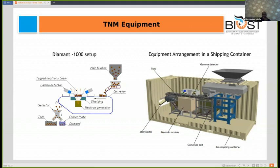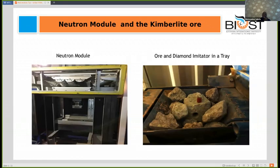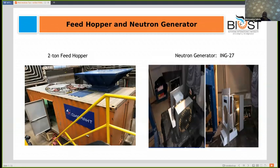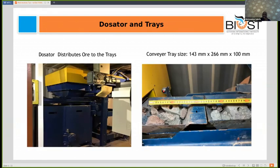On the right is the arrangement of equipment in a shipping container. On the left is a neutron module showing the BGO detectors and the neutron generator. On the right is a tray containing the kimberlite ore and a diamond imitator — the red or brownish object. The diamond imitator is inserted in the tray wall and then irradiated. Also shown is a two-ton feed hopper where the ore is loaded, the neutron generator, and a drossetter that distributes the ore into trays.